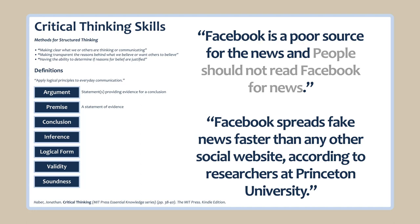A conclusion is a declaration accepted as true if we accept the premises presented in the argument to be true. In our example, the conclusion is 'people should not read Facebook for news.' The argument with its premises leads us to a conclusion. The steps in the argument — the premises — and their presentation are the inference. Consider the inference as the structure of the argument with all its components and presentation.